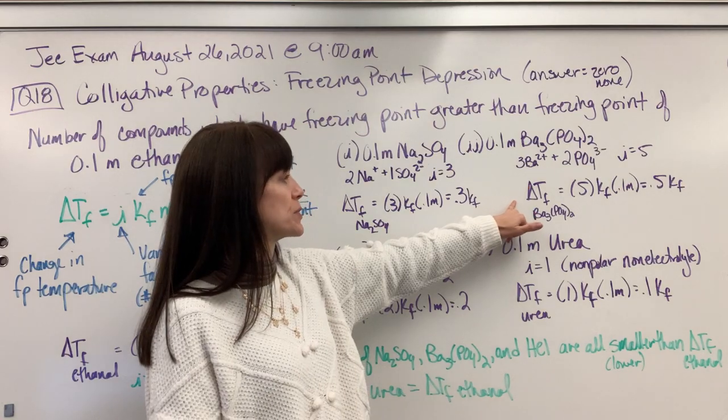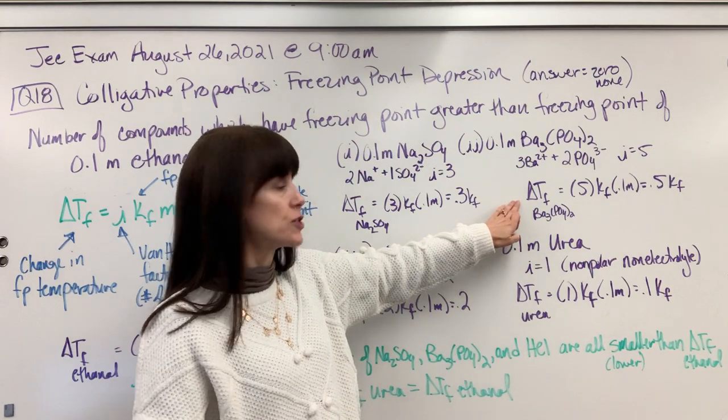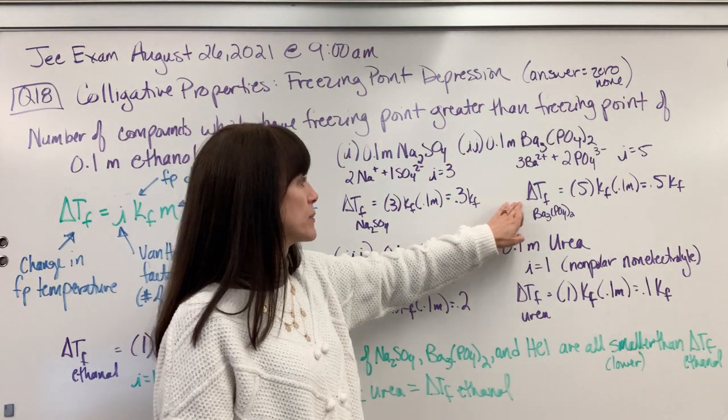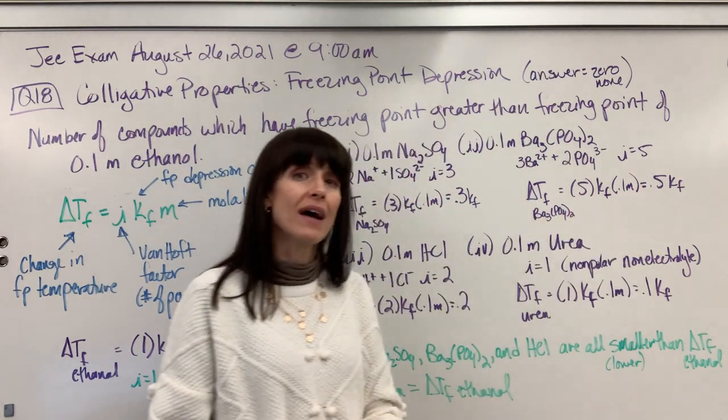So the change in temperature for freezing point, remember, freezing point depression, the freezing point is going to decrease this much. From the pure freezing point temperature, we're going to have five times Kf times 0.1 gives you 0.5 Kf.